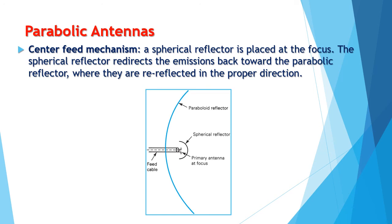For the center feed mechanism, a spherical reflector is placed at the focus. The spherical reflector redirects the emission back towards the parabolic reflector, where they are reflected in the proper direction. As you can see in the images, there is a feed cable and a feed point from which energy is radiated. A smaller spherical reflector reflects the electromagnetic signal from the feed point towards the bigger paraboloid reflector, which then reflects all of the signal towards free space or the atmosphere.